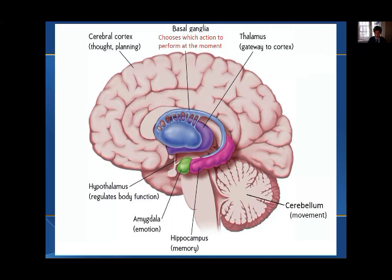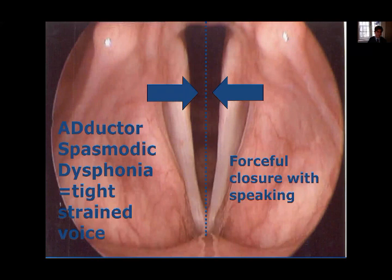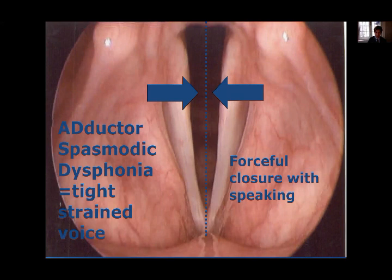Adductor spasmodic dysphonia involves the adductor muscles — those are the muscles in the voice box that bring the vocal cords together for voice. With adductor spasmodic dysphonia, the voice is typically tight, strained, or strangulated because the vocal cords are forcefully closing together and can't vibrate adequately, so the voice seems to be strangled, tight, or cut off.